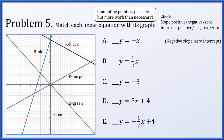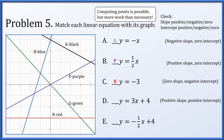y equals negative x has negative slope and zero intercept — that's the green line. y equals one half x has positive slope and zero intercept — that's the purple line. y equals negative three has zero slope and a negative intercept — that's the red line. y equals three x plus four has positive slope and intercept of four — that's the blue line. y equals negative one half x plus four has negative slope but a positive intercept — that's the black line.